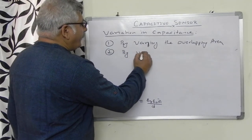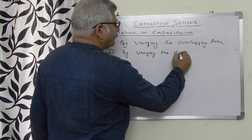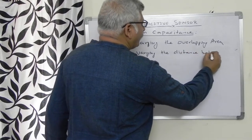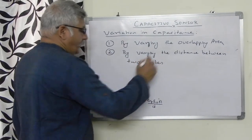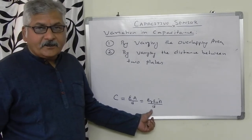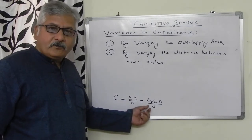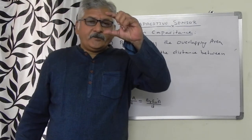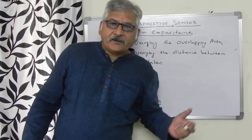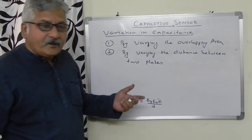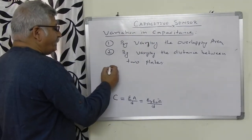Second, by varying the distance between two plates. The capacitance is inversely proportional to the distance d. If you increase the distance between the two plates, the capacitance will decrease; otherwise it will increase.